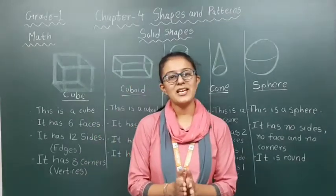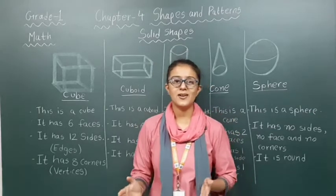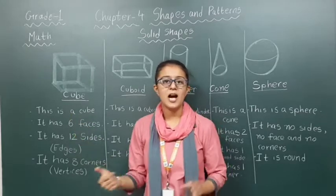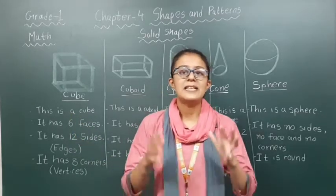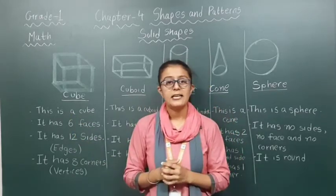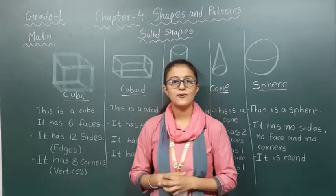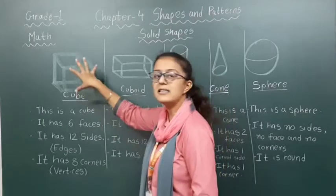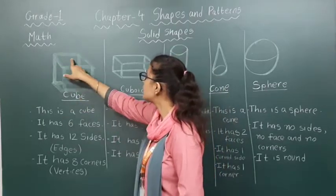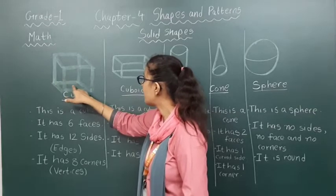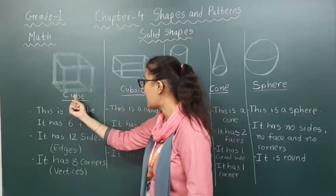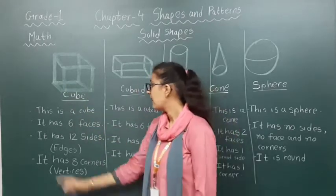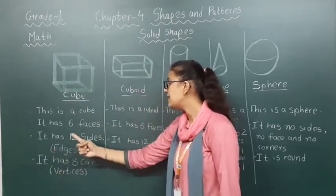Let's quickly move forward to our first solid shape, that is the cube. This is a cube. A cube is made up of 6 squares. It has 6 faces. Faces are where the squares are made — 1, 2, 3, 4, 5 and 6. These are known as faces. It has 12 edges.